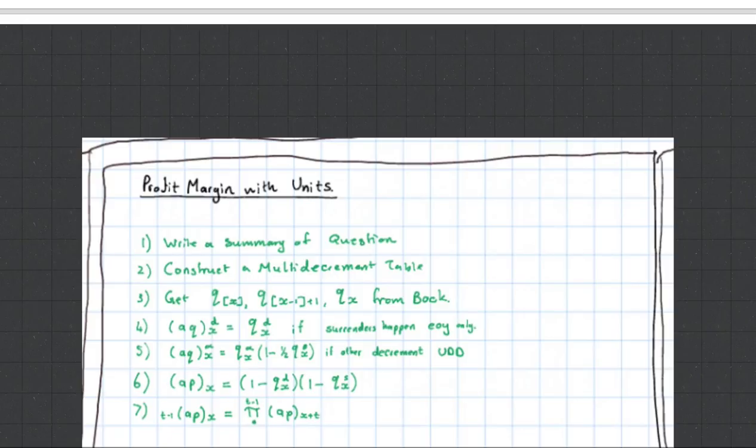So this is when you have to calculate the profit margin on a question like this. The first thing you're going to do is create a quick summary of the question because it's going to be like a page long. They're going to bombard you with facts. The first thing you're going to do is construct a multi-decrement table because people can either die or they can surrender their policies. They can say I want to get out. Normally, they're then going to incur a penalty, and that would actually become a profit to the company. You want to construct your multi-decrement table using these formulas to change your independent probabilities into your dependent probabilities.